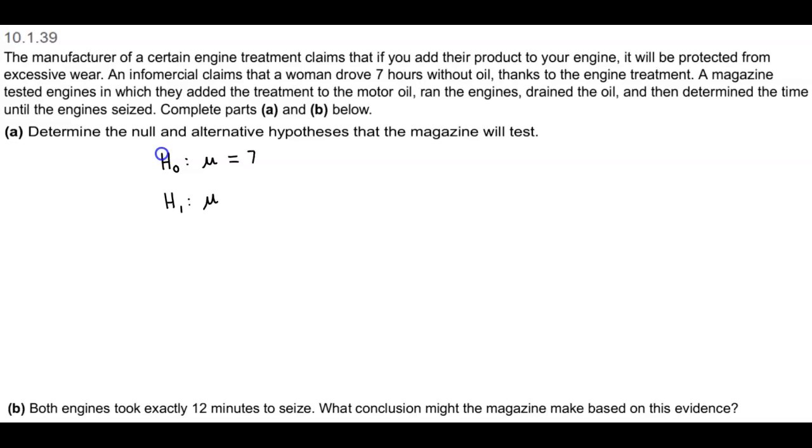It says it claims that. So therefore it doesn't have a greater than or a less than in the particular problem. It doesn't mention anything about greater than or less than. So therefore the alternative is going to be not equal, so it's going to be not equals seven. Therefore that would actually be a two-tailed test.